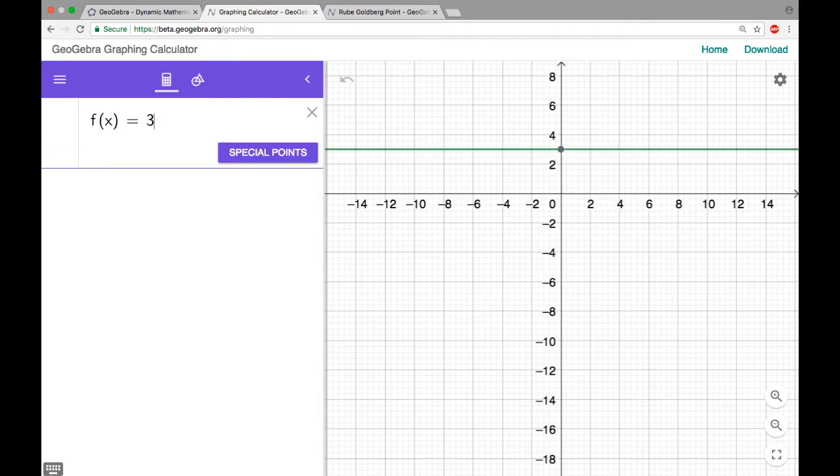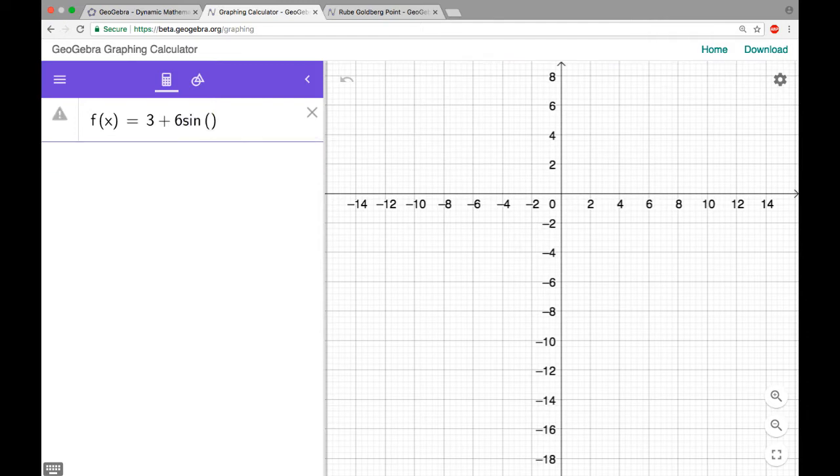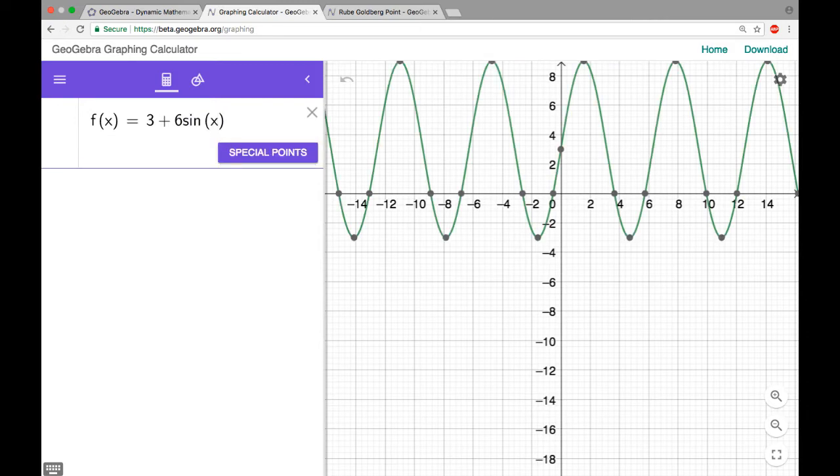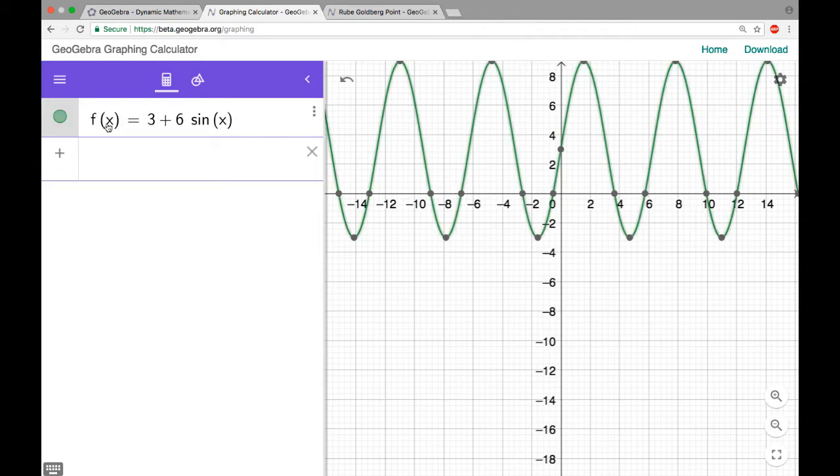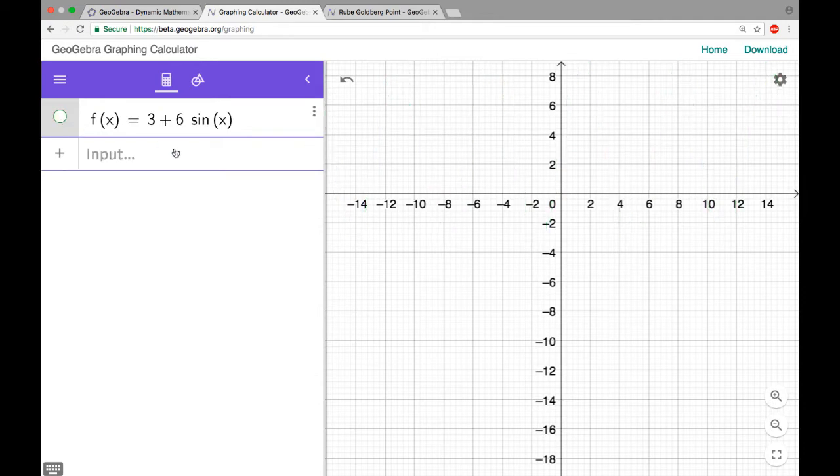I'm going to start with a limaçon. So I'm going to do 3 + 6 sin(x). Okay, so GeoGebra wants this to be a rectangular graph, but I don't really want that. So I'm going to hit enter and then I'm just going to turn it off. Click here to turn it off. We won't see it anymore.